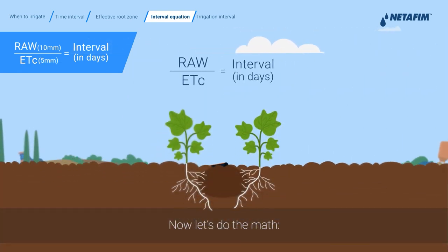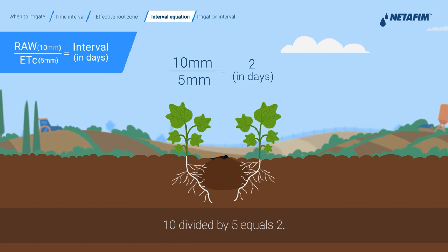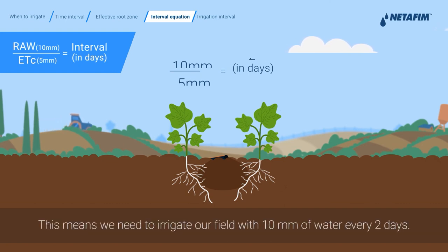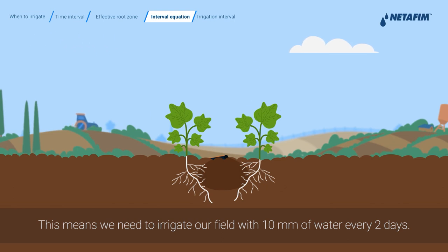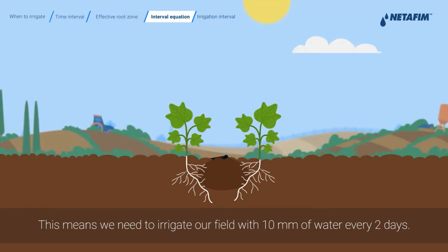Now let's do the math. 10 divided by 5 equals 2. This gives us the time interval between irrigation events — meaning we need to irrigate our field with 10 millimeters of water every 2 days.